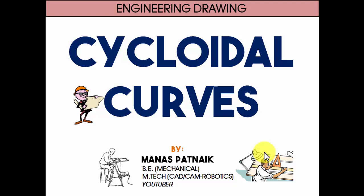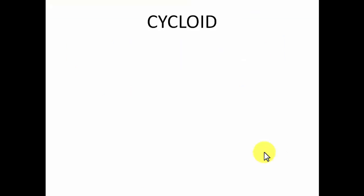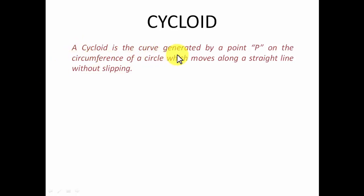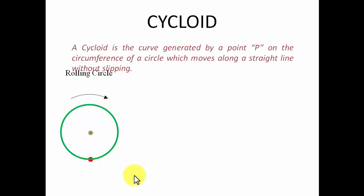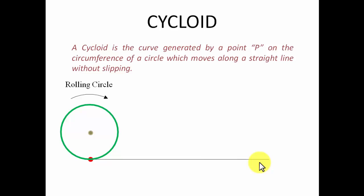The first curve we're going to deal with is what you call a cycloid. The cycloid is the curve generated by a point P on the circumference of a circle which moves along a straight line without slipping. This circle is rolling along a straight line without slipping, and we need to keep track of a certain point — this red point. This is the circle having a diameter D rolling in the clockwise sense. When this circle completes one revolution, the horizontal distance it travels will be equal to the circumference, that is pi D.